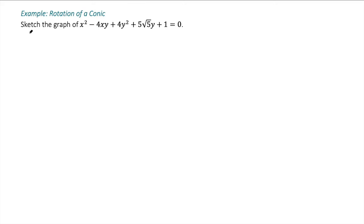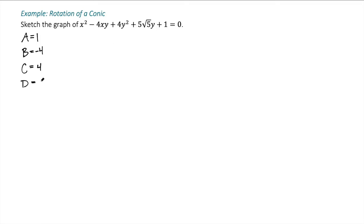First I identify my coefficients. A is the number in front of x squared, which is 1. B, the coefficient of the xy term, is negative 4. C, the coefficient of y squared, is positive 4. D is the coefficient of the x term — there is no x term, so that's 0. E, the coefficient of the y term, is 5 root 5. And F, the constant term, is 1.